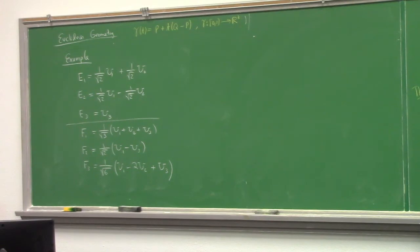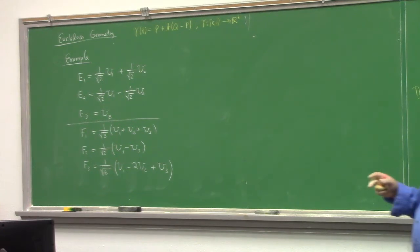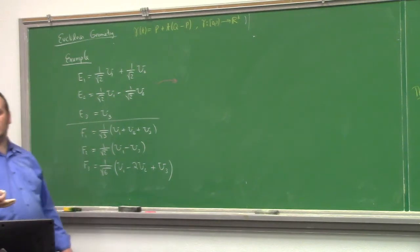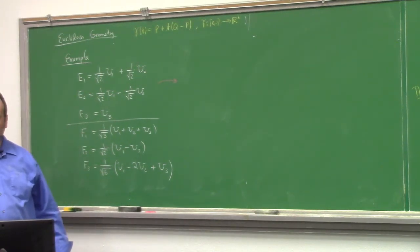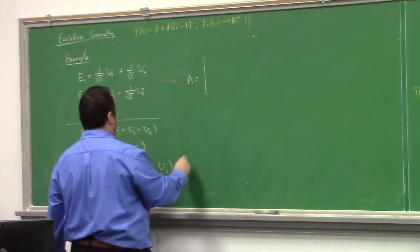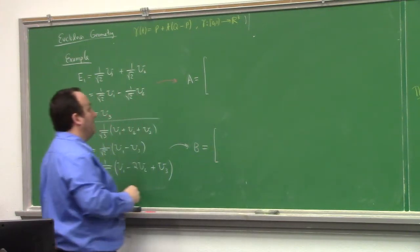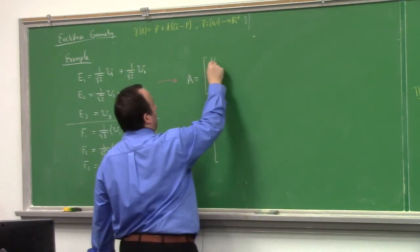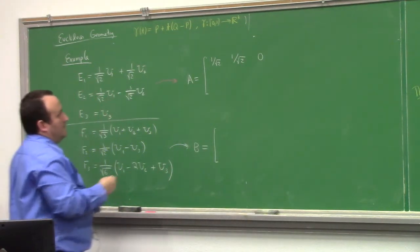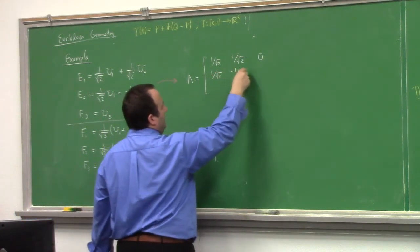Now an example with numbers. E_1 = (1/√2)U_1 + (1/√2)U_2, E_2 = (1/√2)U_1 − (1/√2)U_2, E_3 = U_3. That's the E basis. The F basis: F_1 = (1/√3)(U_1 + U_2 + U_3), F_2 = (1/√2)(U_1 − U_3), F_3 = (1/√6)(U_1 − 2U_2 + U_3). Here's the E frame and F frame. The attitude matrix A is constant, as is B — (1/√3, 1/√3, 1/√3) for the first row of B.